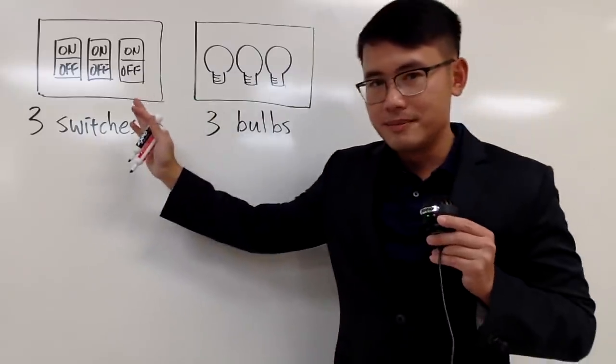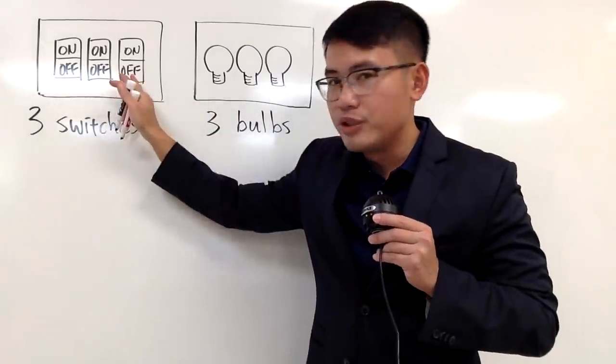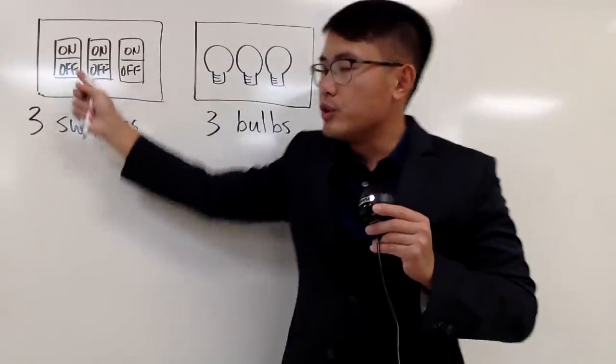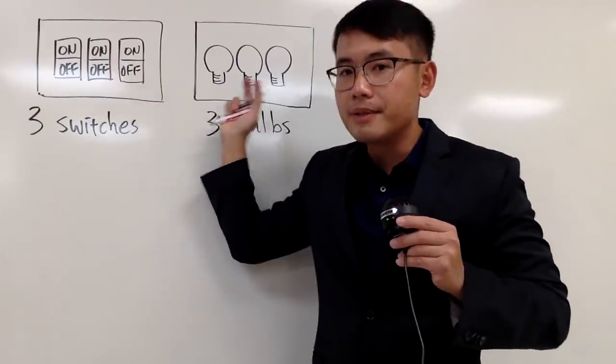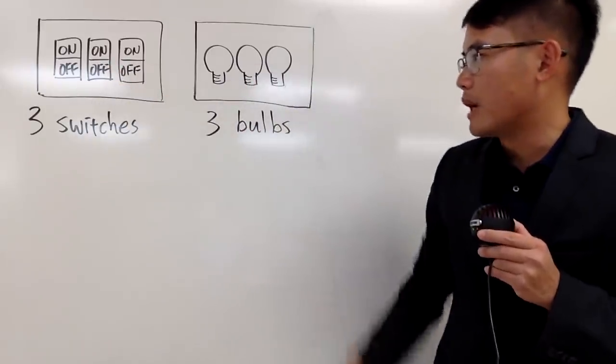Here's the question. There are two rooms. In the first room, there are three light switches, and in the second room, there are three light bulbs. These switches are connected to these light bulbs, but you don't know which one is what. You don't know which one is connected to which light bulbs.